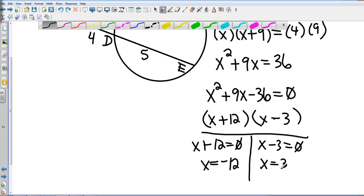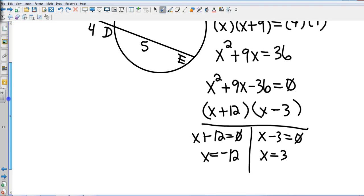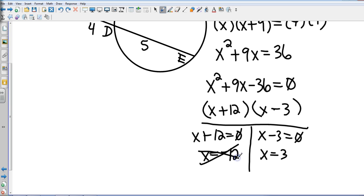Now I need to substitute both of those in and make sure that they work. So I've got negative 12 and 3. Obviously if X is negative 12, that means AB has a distance of negative 12, and that is not going to work. So logically this one cannot work. That gives me a final answer of X equals 3.